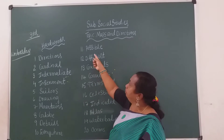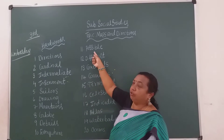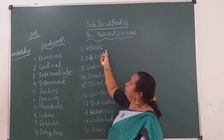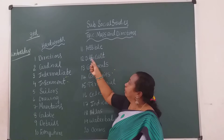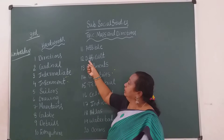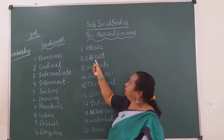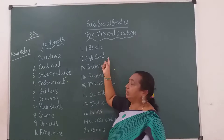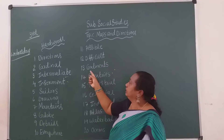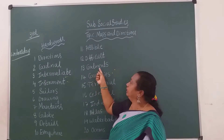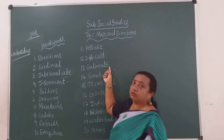Eleventh one: possible. P-O-S-S-I-B-L-E, possible. Twelfth one: difficult. D-I-F-F-I-C-U-L-T, difficult. Thirteenth one: continents. C-O-N-T-I-N-E-N-T-S, continents.